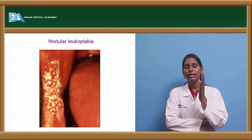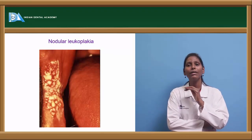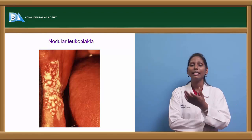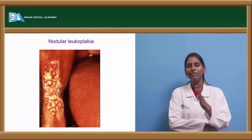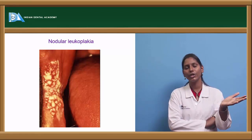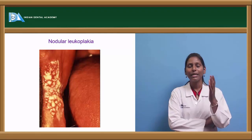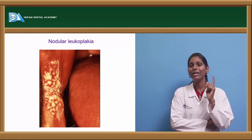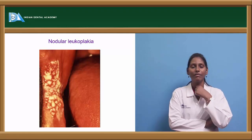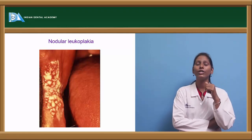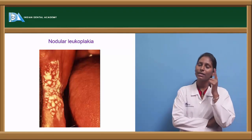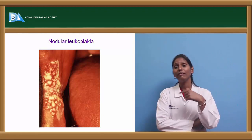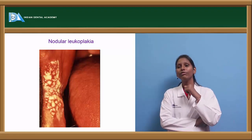Erythroplakia is similar in definition to leukoplakia except that it appears as a nice bright red and velvety lesion. These erythroplakias have a very high propensity to convert into malignancies. The malignant transformation rate is very high in case of erythroplakia compared to leukoplakia.